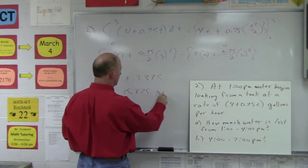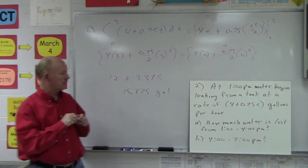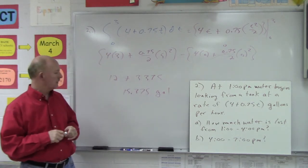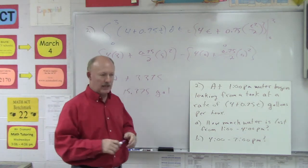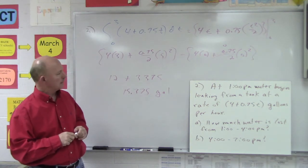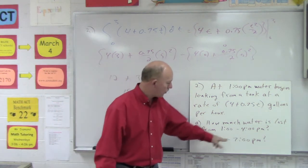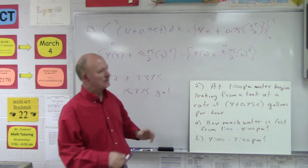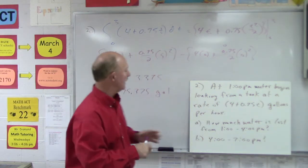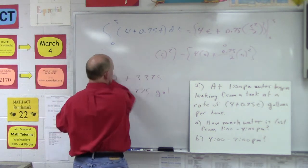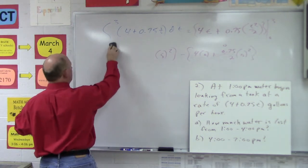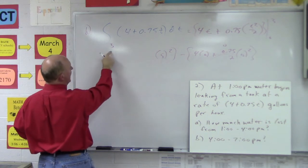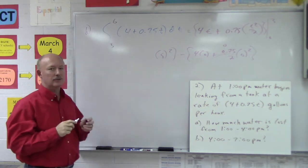So 15.375 gallons of water has leaked from the tank over the first three-hour period from 1 p.m. to 4 p.m. Now for part B — from 4 p.m. to 7 p.m. — that's the next three-hour period. So our lower bound will be 3 and our upper bound will be 6. We evaluate the same antiderivative from 3 to 6.